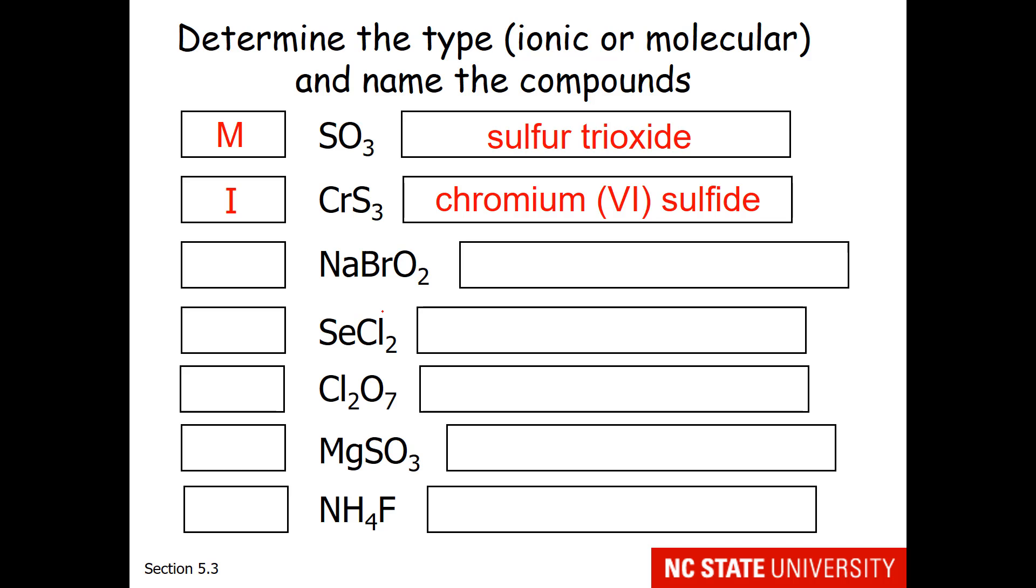Sodium, BrO2. Well, sodium is the hint that this is an ionic compound. I want you to think about this, which is a polyatomic and how you would name this particular polyatomic. And I hope you come up with sodium bromite.